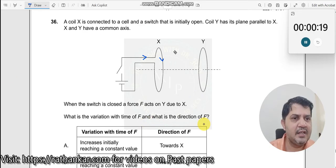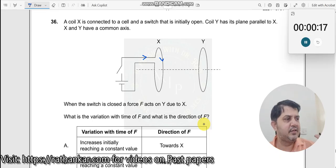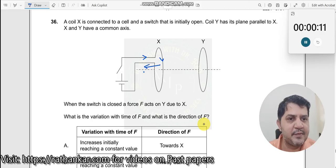So initially when this has been closed, the current goes like this. Magnetic field is in this direction. So this becomes your north pole, this becomes your north pole and this becomes your south pole. This becomes your south pole.